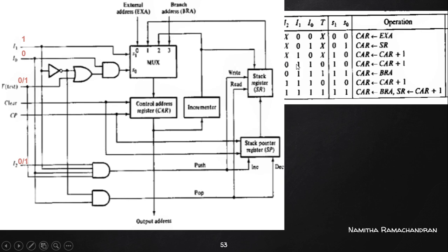Third case: i1 equals 1 and i0 equals 0. Since i0 is 0, one AND gate input is 0, making S0=0. S1=1, S0=0 is decimal 2, indicating an increment operation — sequential instruction execution. The control address register content is incremented by 1 and loaded back. The stack circuitry is also inactive since i0=0 makes both AND gate outputs 0.